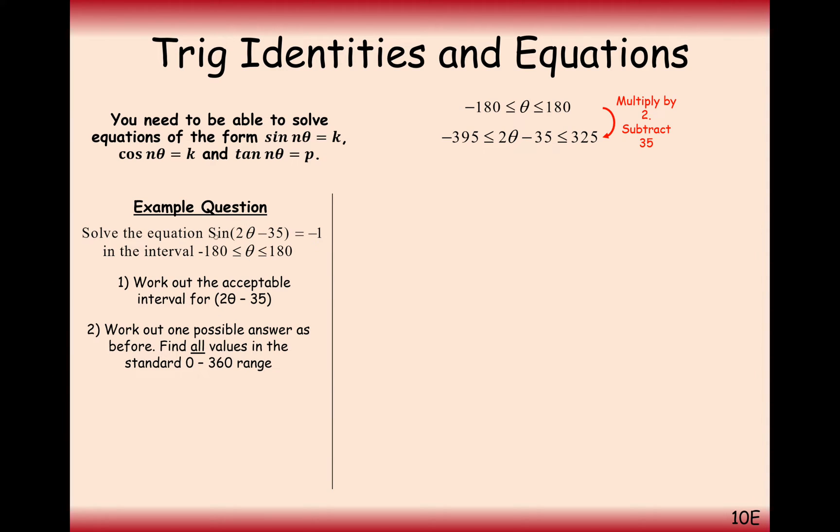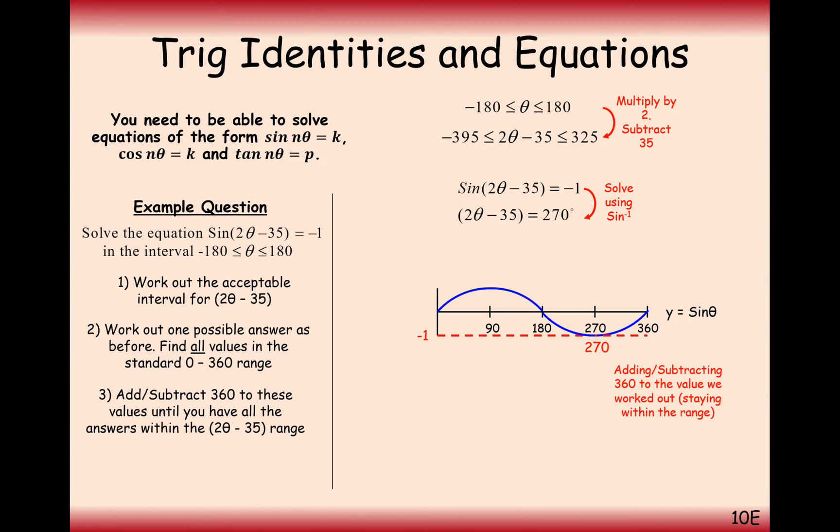Now we find all of these sine values that will give us minus 1 in between this boundary. So the first thing we do is we do sine inverse of -1 to get our first solution, and we'll get 270 there. Then we'll work our way backwards by taking away 360 and forwards by adding on 360. We go onwards by 360 more to get to 630, that's outside the boundary, so we won't need that one. We go backwards now to minus 90, yeah that's a good one. Back another 360 to minus 450, that's outside the lower boundary, so we don't need that one. We're just going to get two answers here.